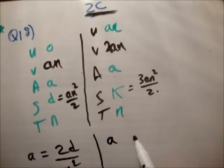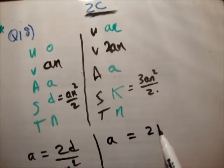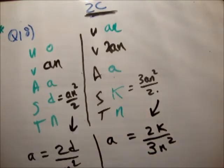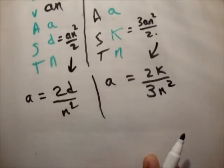And we know that a over here is equal to 2k over 3n squared. Like that. So a and a. Sorry, you couldn't see that. Excuse me.